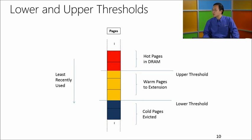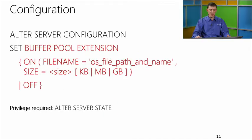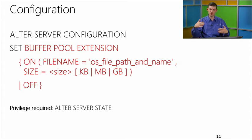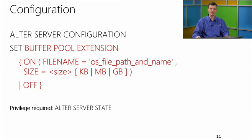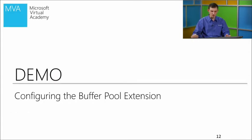Now we understand how buffer pool extension works. How easy is it to configure? The configuration DDL is pretty simple. All you need to specify when configuring the buffer pool extension feature is where to store it, the fact that you want to enable it, and the size. When you don't need the feature or want to change any configuration parameter, you need to turn it off first. You need the ALTER SERVER STATE permission because you use the ALTER SERVER CONFIGURATION command to modify it.